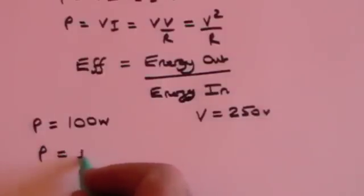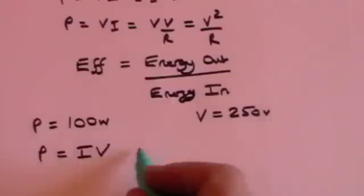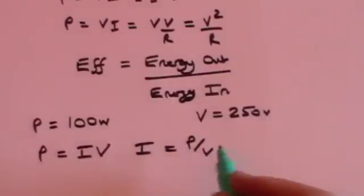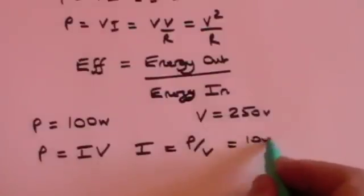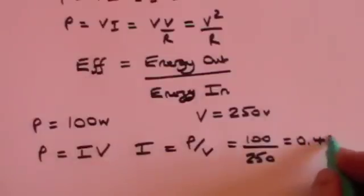P, remember, power is current times voltage, or voltage times current, which means that the current must equal the power divided by the voltage. And that's 100 watts divided by 250 volts, and that's 0.4 amps.